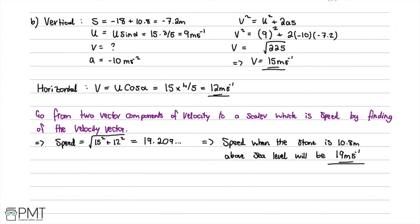For part b, five marks were available. The first mark was for using the correct equation for the horizontal component. The second mark was for using v squared equals u squared plus 2as with correct values for the vertical component. The third mark was for the correct vertical velocity. The fourth mark was for knowing to find the magnitude of the velocity vector. The fifth and final mark was for the correct answer of 19 meters per second.